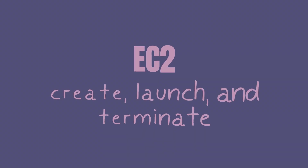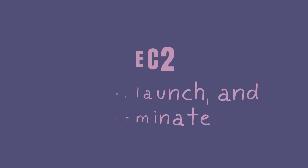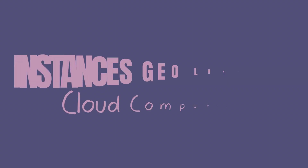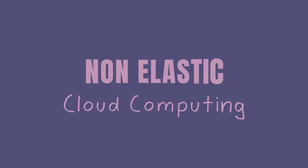That dynamic aspect is important. A user can create, launch, and terminate server instances as needed, paying by the second for active servers — and that is where the term elastic comes from. EC2 provides users with control over the geographical location of those instances, allowing for latency optimization and high levels of redundancy, as well as auto scaling for aspects of the service that are not elastic by design.